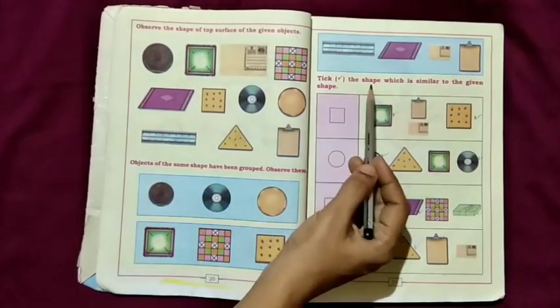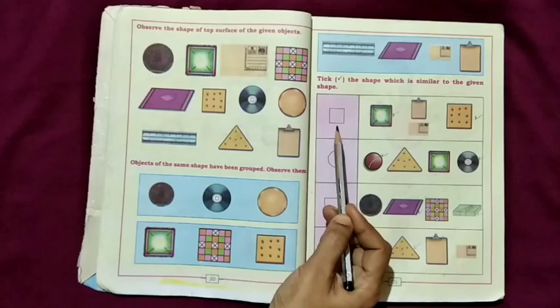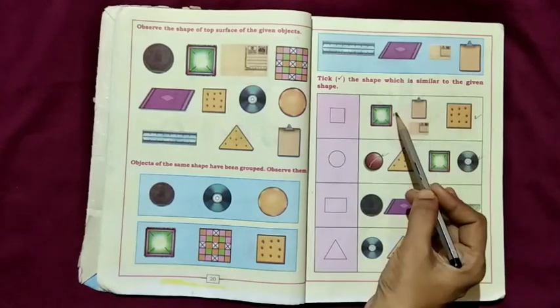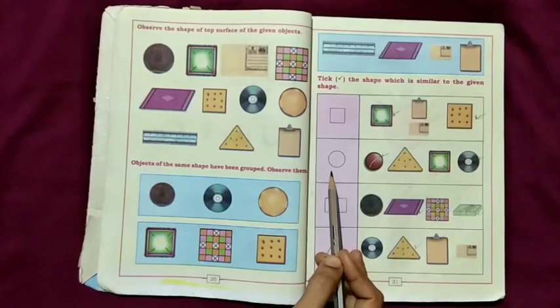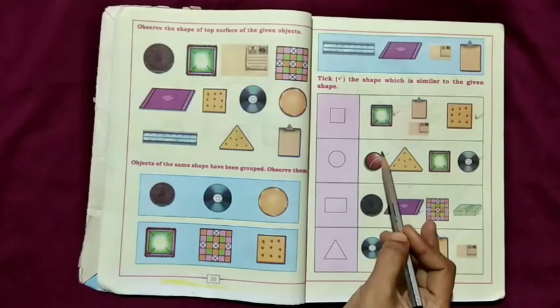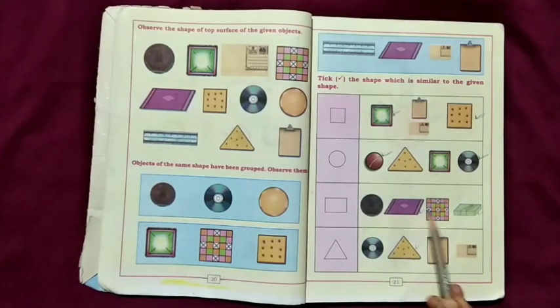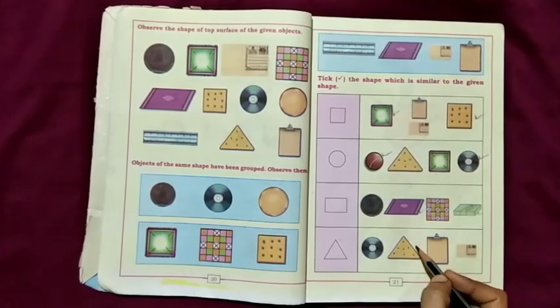Tick the shape which is similar to the given shape. What is this shape? This is square. Which shape looks like a square? This and this. Tick near this object. Tick near this is rectangular. Mat and this box are like a rectangle, that is cuboid. This is triangle. This biscuit is the only one the same like a triangle.